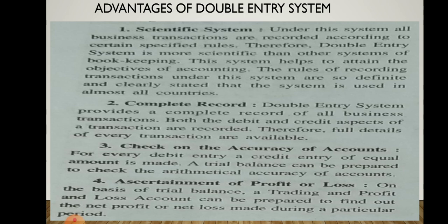The fourth point is ascertainment of profit or loss. On the basis of the trial balance, a trading and profit and loss account can be prepared to find out the net profit or net loss made during a particular period. Through the trial balance, we prepare a profit and loss account, which is very helpful to find out how much profit or loss occurred during any particular period.